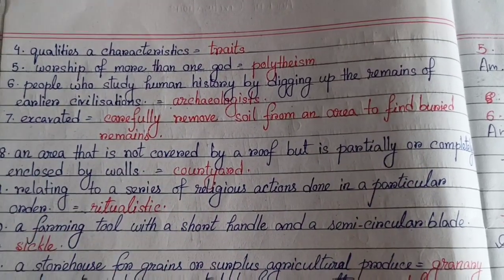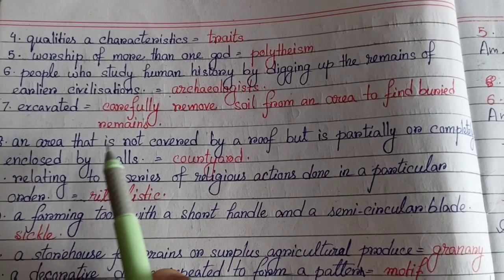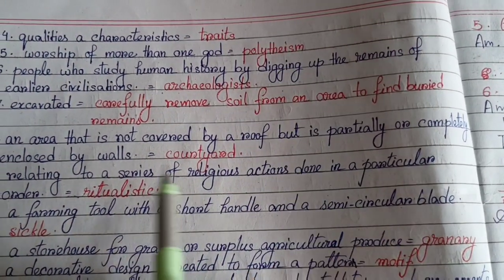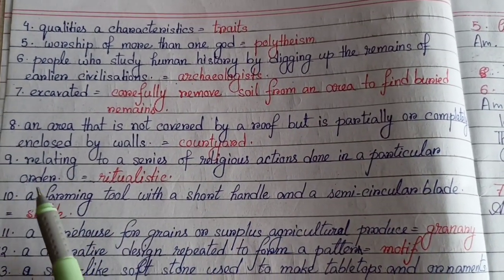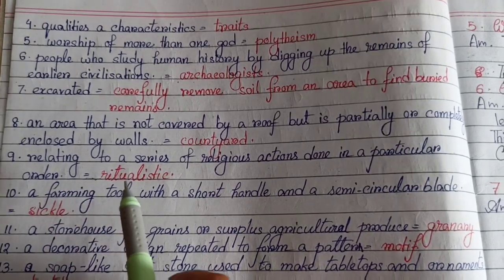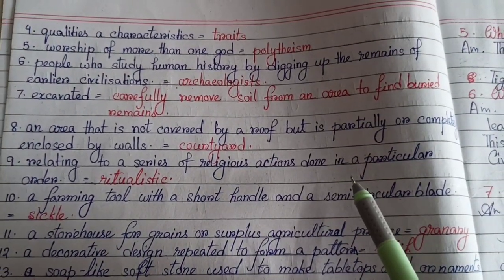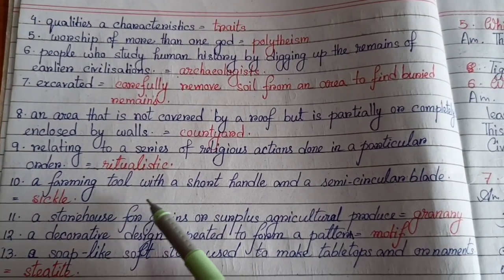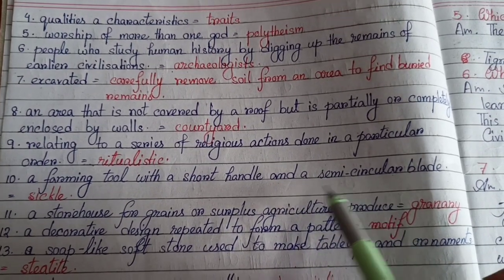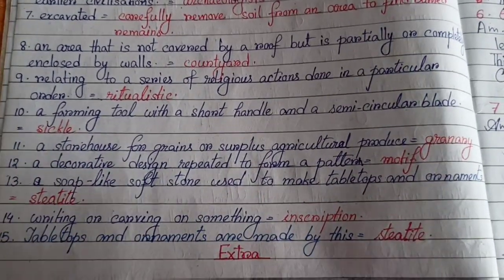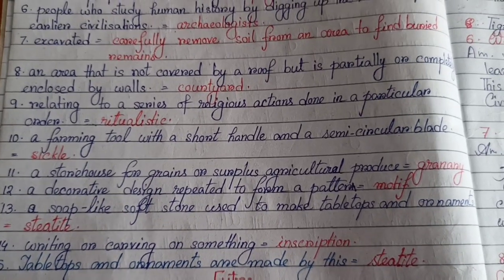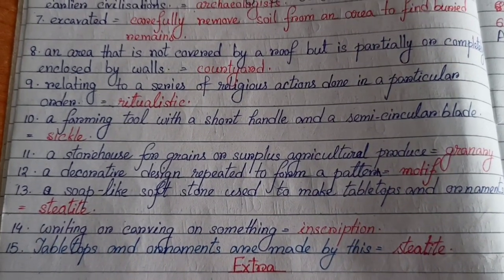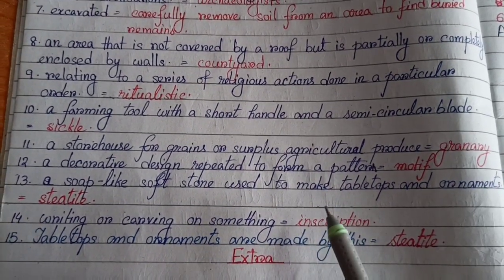Number seven: Carefully remove soil from one area to find buried remains — excavated. Number eight: An area not covered by a roof but enclosed by walls — courtyard. Number nine: Relating to a series of religious actions done in a particular order — ritualistic. Number ten: A farming tool with a short handle and a semi-circular blade — sickle. Number eleven: A storehouse for grains or surplus agricultural produce — granary.